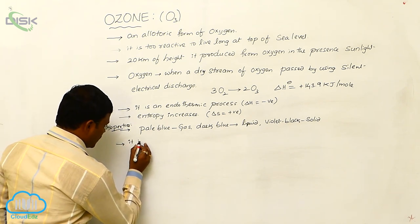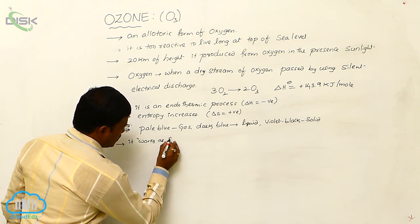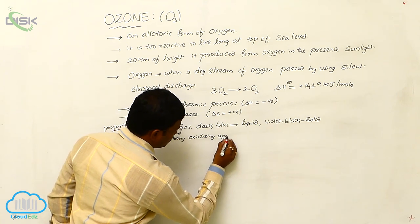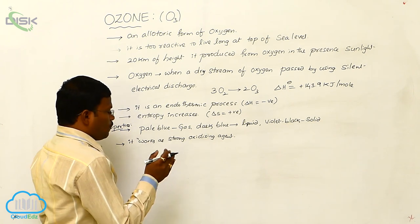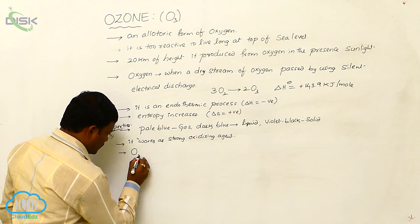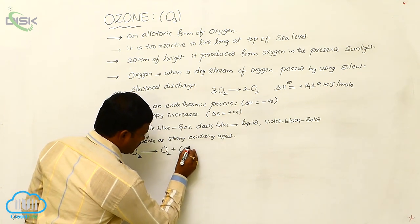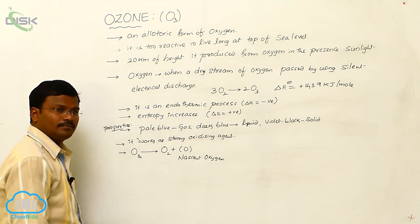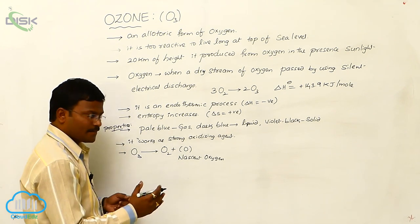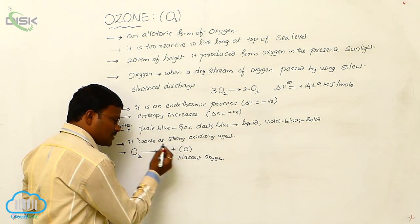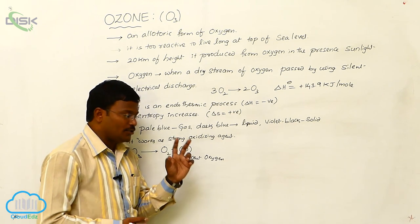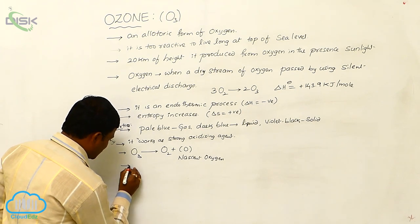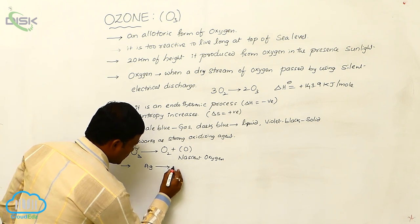Most importantly, ozone works as a strong oxidizing agent. This is because ozone can dissociate to produce nascent oxygen, which is atomic oxygen — a newly born oxygen atom from ozone. Due to the release of nascent oxygen, ozone acts as a strong oxidizing agent. For example, it can oxidize silver into silver oxide.